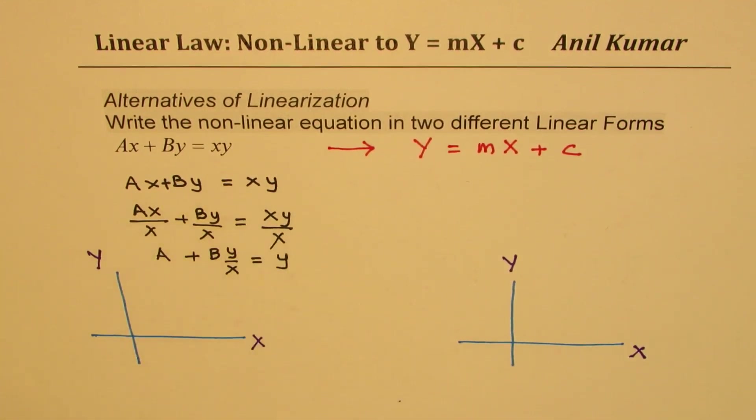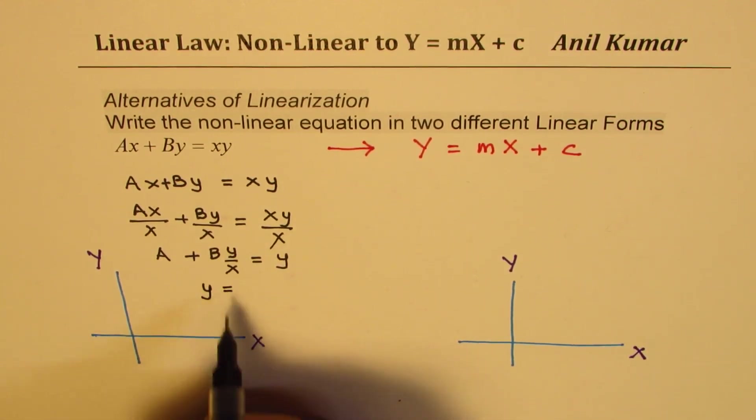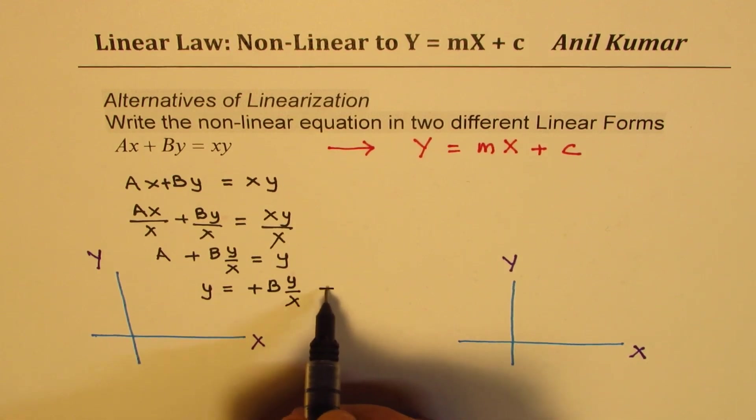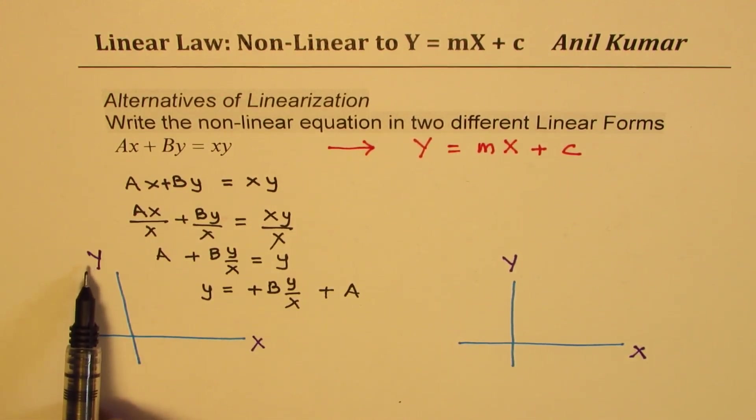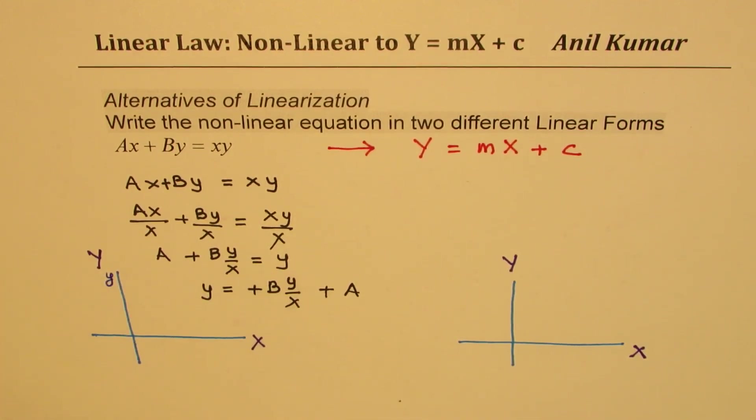So I could always rearrange this and write it in the form of Y equals minus, Y equals capital B, Y over X plus A. So I just wrote it the other way. So what you find here is that I could replace this capital Y with lowercase y. So if you compare what we just got here is that this Y represents the capital Y. So this axis becomes lowercase y. And on that axis we get Y over X. So this is equal to Y over X.